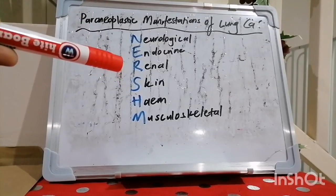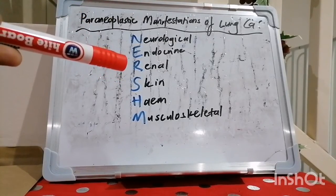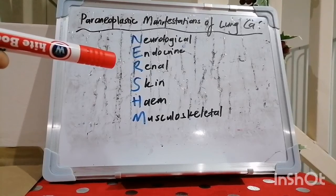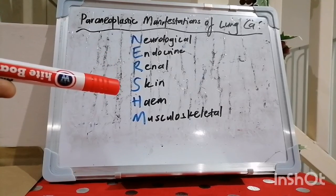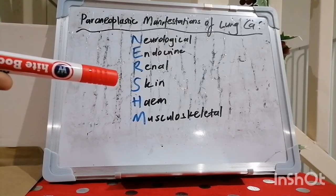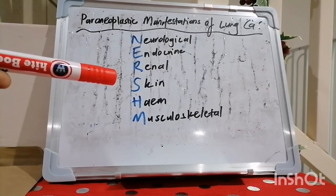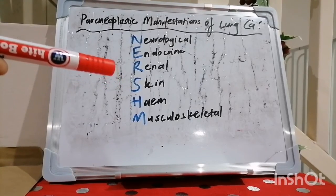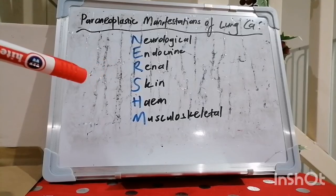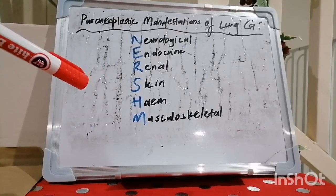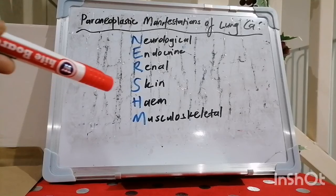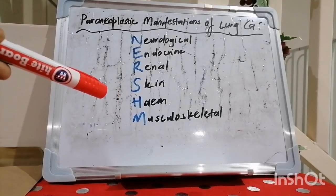R stands for renal manifestations, which are very rare — we see nephrotic range proteinuria, but it is very rare. S stands for skin manifestations as a paraneoplastic phenomenon, which includes things like acanthosis nigricans and dermatomyositis. Cancers are also hypercoagulable, so they cause a hypercoagulable state predisposing to thrombosis.